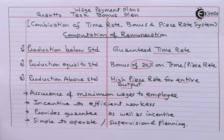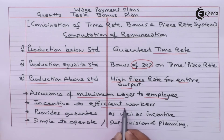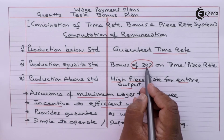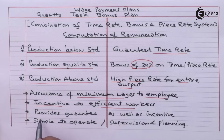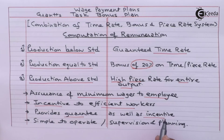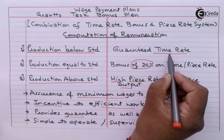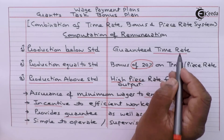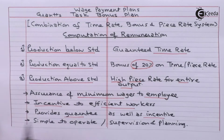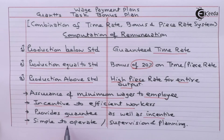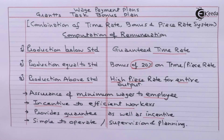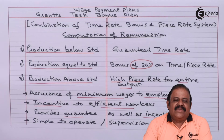This method is very useful. It assures a minimum wage to every employee, and it provides incentive to efficient workers by offering a bonus. It provides both guarantee and incentive — each worker gets minimum time rate wages, and if they show efficiency, they earn more. This method is also simple to operate, supervise, and plan.